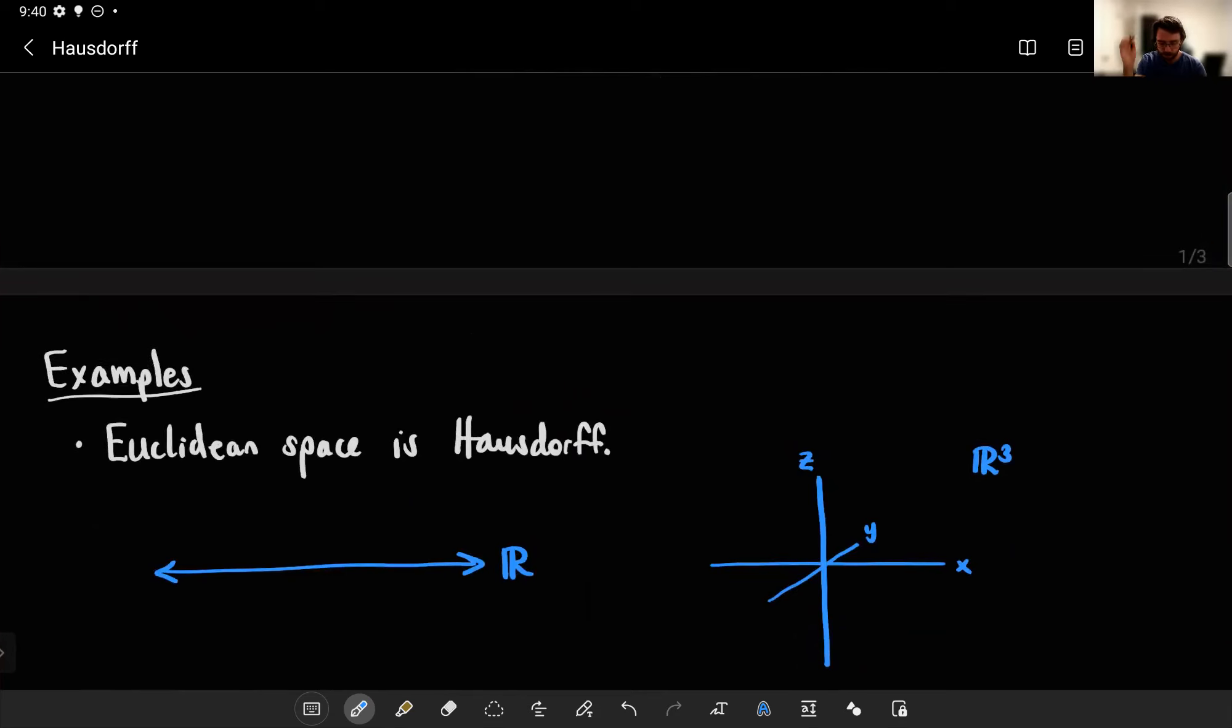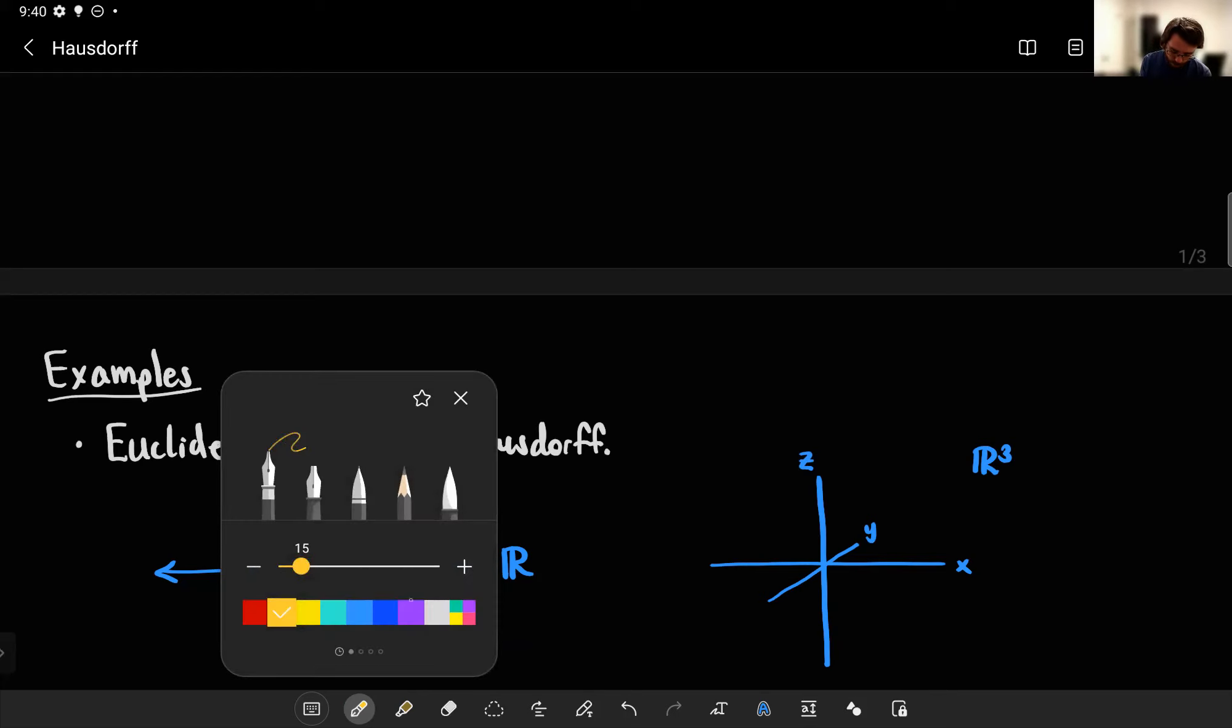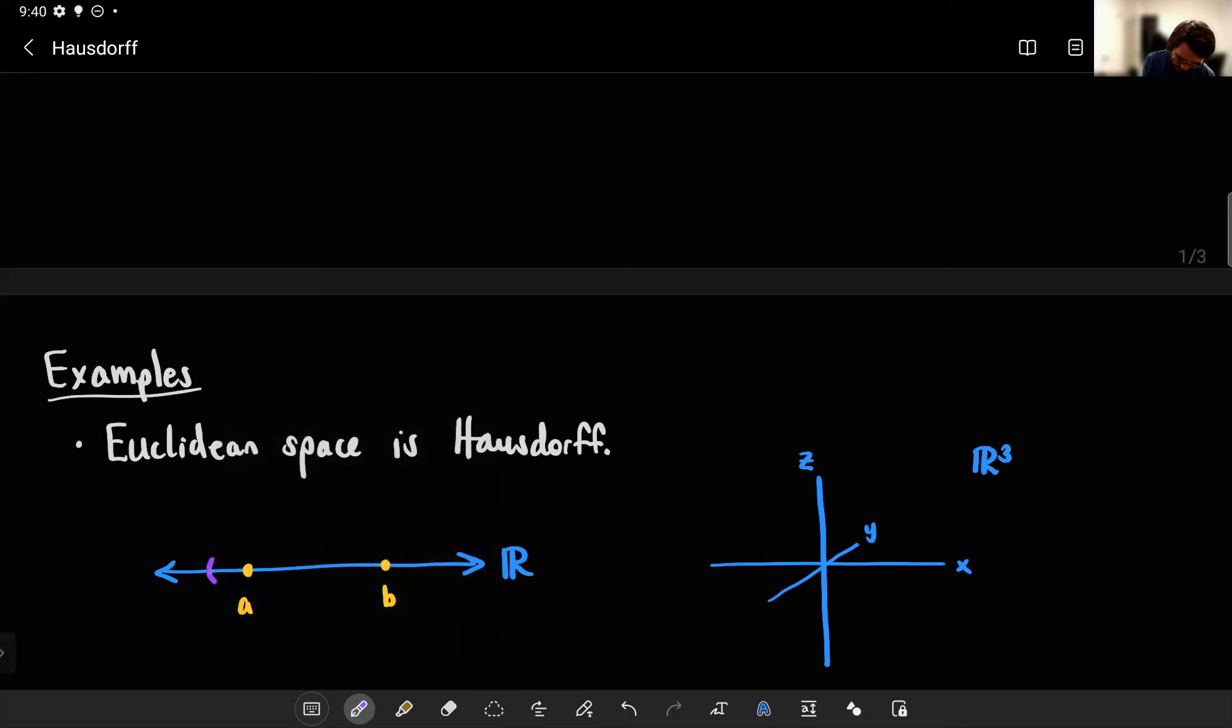Okay, so I already drew it for R2, but let's consider for the real line. Of course, you can definitely put open sets around any pair of distinct points. If you want them to be as close as possible, you could use that distance divided by two trick I just mentioned. And similarly, if you went into R3, maybe I get a point along here, say that's one point, and this is some other point.